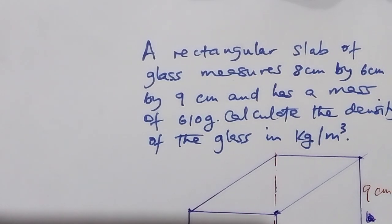A rectangular slab of glass measures 8 cm by 6 cm by 9 cm and has a mass of 610 grams. Calculate the density of the glass in kilograms per meter cubed.